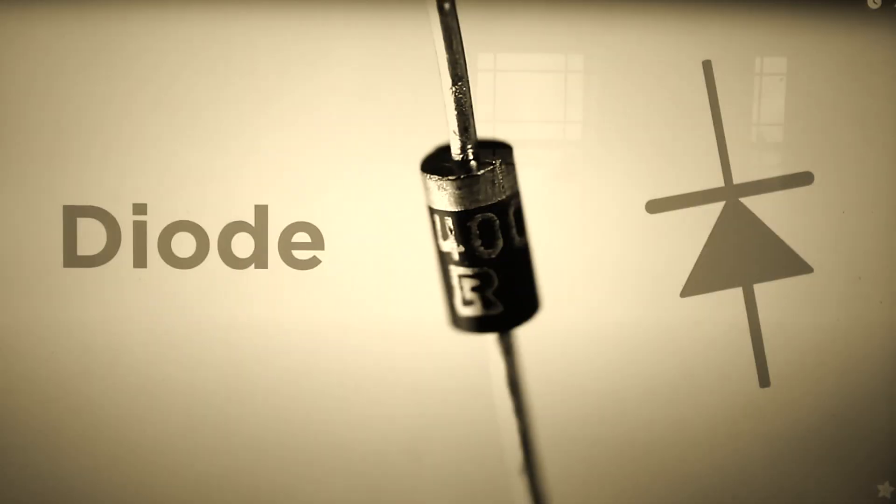Since you're here viewing this video, you probably already know that a diode permits an electric current to flow only in one direction and not in the other, like a check valve. Simple enough.